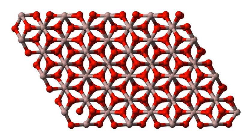Natural occurrence: Corundum is the most common naturally occurring crystalline form of aluminium oxide. Rubies and sapphires are gem quality forms of corundum, which owe their characteristic colors to trace impurities. Rubies are given their deep red color and laser qualities by traces of chromium. Sapphires come in different colors given by various other impurities such as iron and titanium.